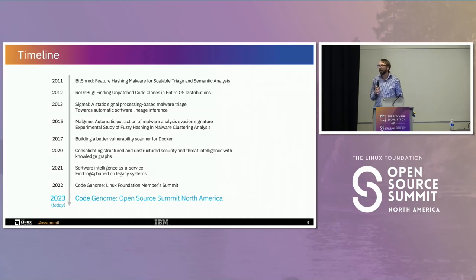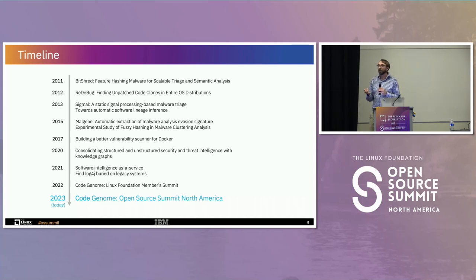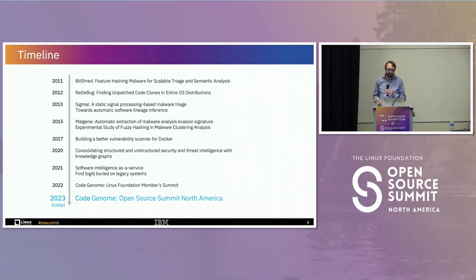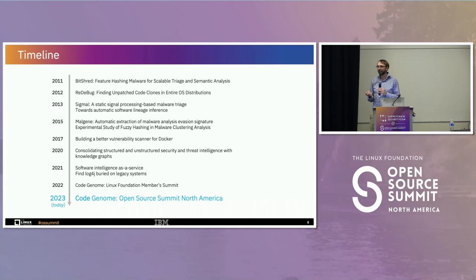This is something the team has been working on for close to 10 years, some during their PhD work. Early work includes ReDebug by Jiang, which looked for vulnerabilities in software that may have been copied and pasted into other code — you patch one instance but not the other. Sigmile is a seminal work looking at variants of malware, and we use some of those original ideas in our fingerprint. In 2017 we looked at Docker image vulnerability scanners and found they all had a fairly fatal flaw: they relied on metadata inside the containers, which we can't necessarily trust since those images might be compromised or malicious.